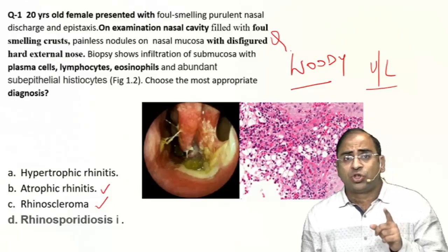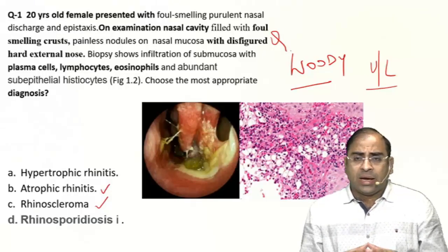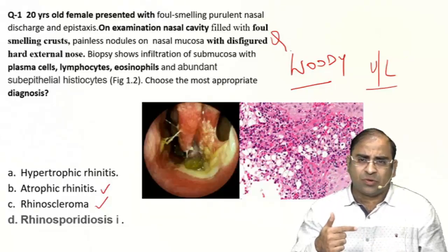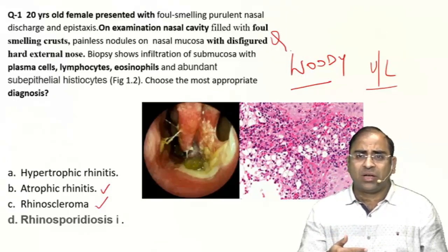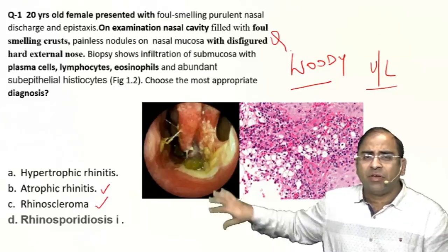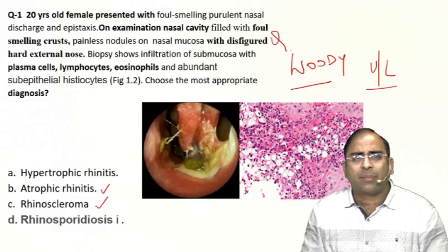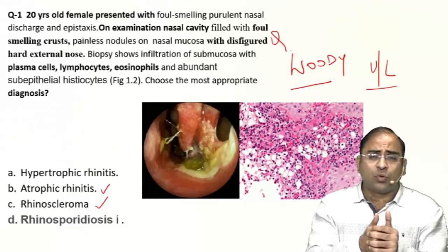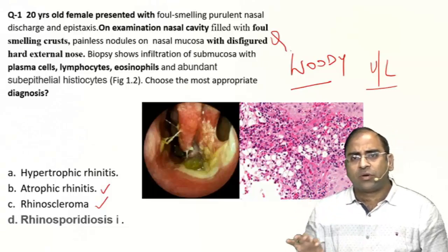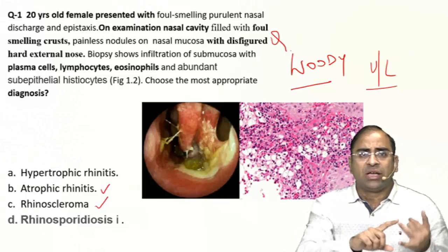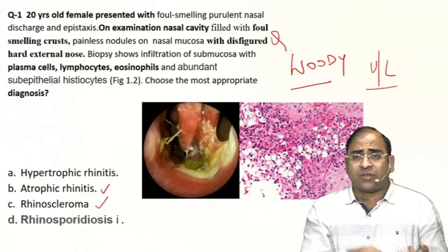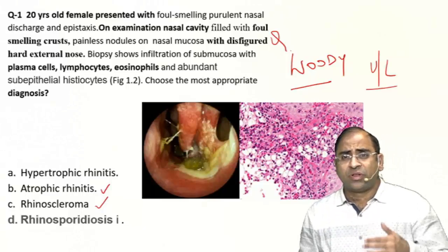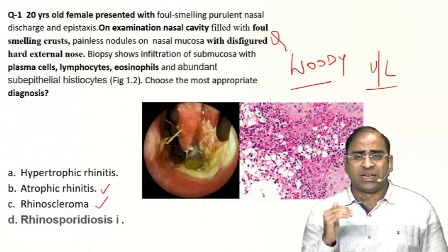The biopsy shows infiltration — this is the current pattern. When the pattern changes, only those students who adapt will dominate. The examiner is giving you a pathology slide showing abundant sub-epithelial histiocytes and Mikulicz cells, which again go in favor of rhinoscleroma. Eosinophils, Russell bodies, abundant sub-epithelial histiocytes — your macrophages are there in this biopsy. This points to a granulomatous condition of the nose — rhinoscleroma.